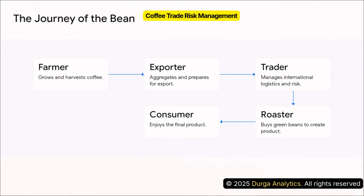So let's trace the physical journey of that bean. Think of this not just as a supply chain, but as a chain of custody for risk. We're going to follow the coffee from the farmer to the exporter, then to the international trader, the roaster, and finally to the consumer. Pay really close attention to those arrows on the screen — each one represents a handover of ownership, of pricing decisions, and most importantly, of price risk.